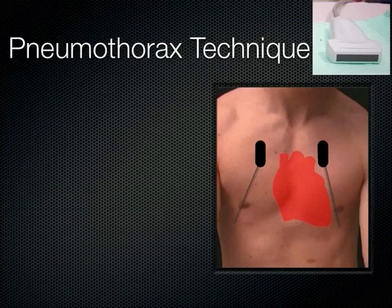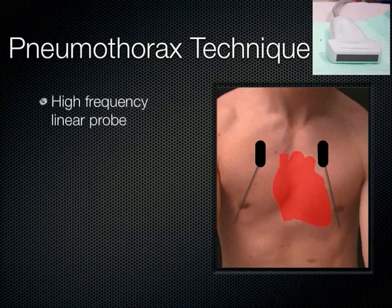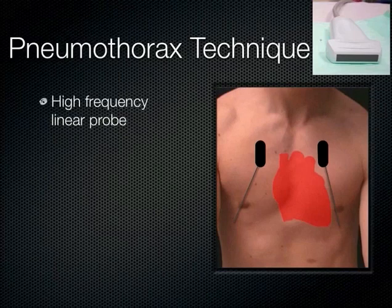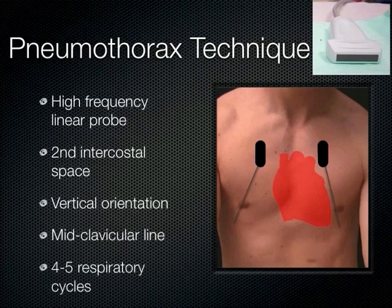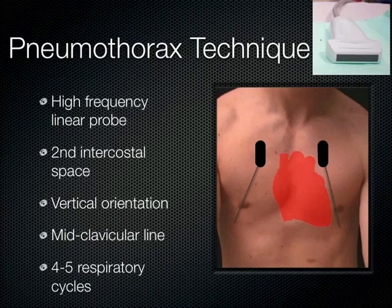Start at the mid-clavicular line using the high-frequency probe, since we're looking very superficially — the pleural line is only a centimeter or two underneath the surface. Start in the second intercostal space with the orientation marker towards the head. Move downwards anteriorly, then laterally to get images in all four quadrants — a little more laterally on the left to avoid the heart. When you put the probe on the patient, watch them breathe through a few respiratory cycles, because you're trying to pick up whether the pleura is moving.